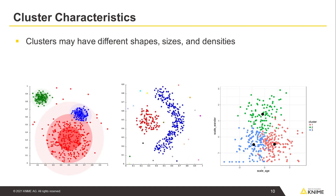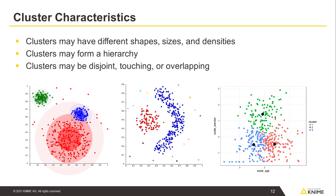Clusters may have different shapes, sizes, and densities. Clusters may form a hierarchy — for example, cluster C is formed by merging clusters A and B. Clusters may also be disjoined, touching, or overlapping.